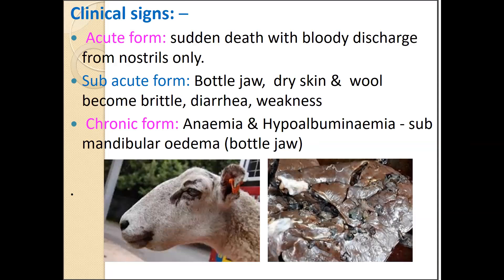Acute fascioliasis should be differentially diagnosed from anthrax, because in anthrax there is oozing of tar-colored, unclotted blood from all natural orifices — not only nostrils, but also ears, anus, and others — whereas in acute fascioliasis, bloody discharge is observed only from the nostrils. In the subacute form, there will be bottle jaw condition, dry rough skin, diarrhea, and weakness. In the chronic form, only anemia, hypoalbuminemia, and bottle jaw condition will be observed.